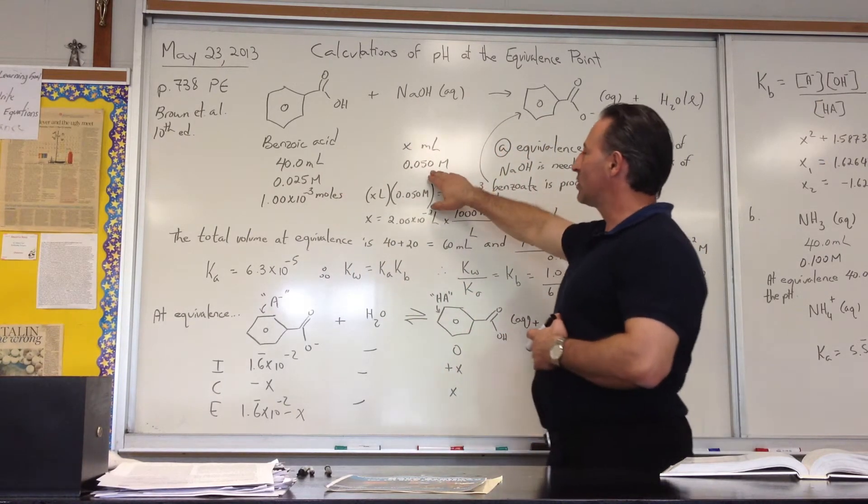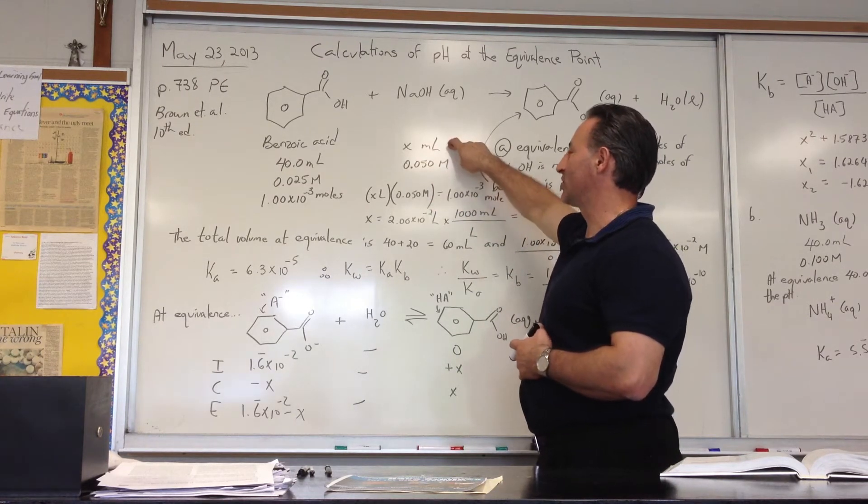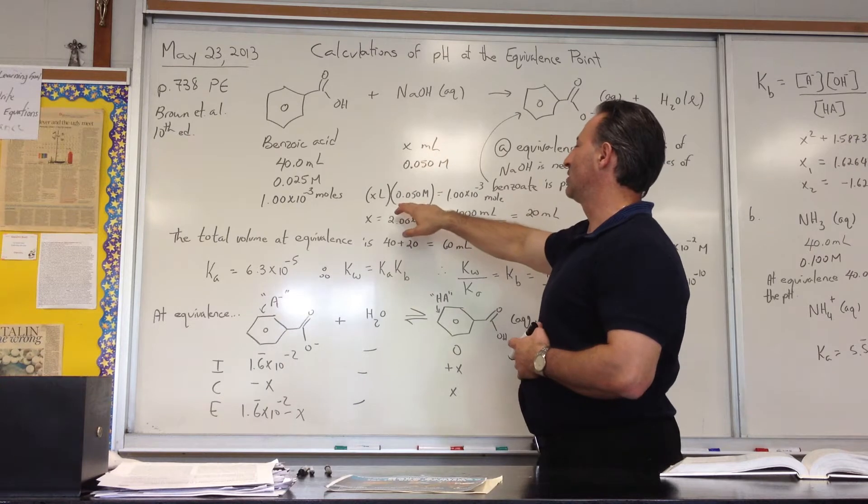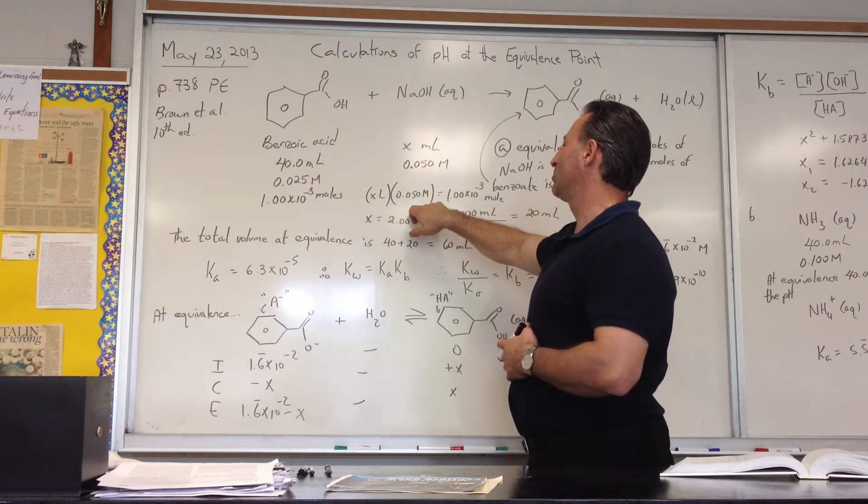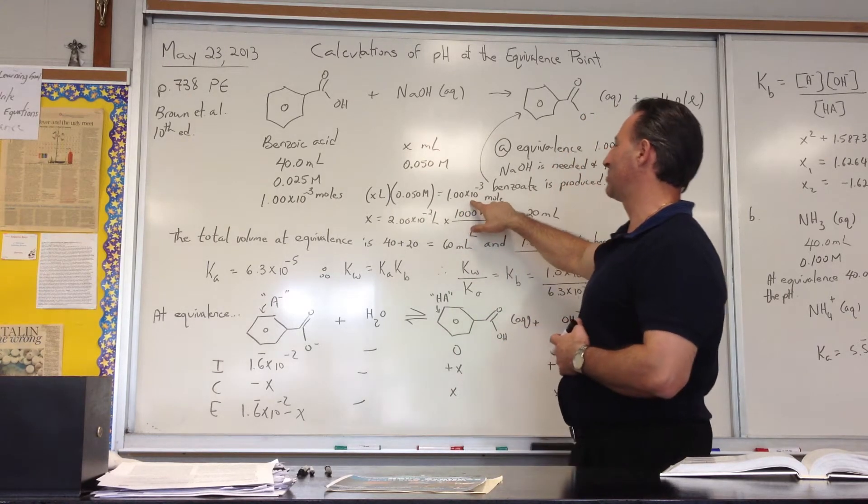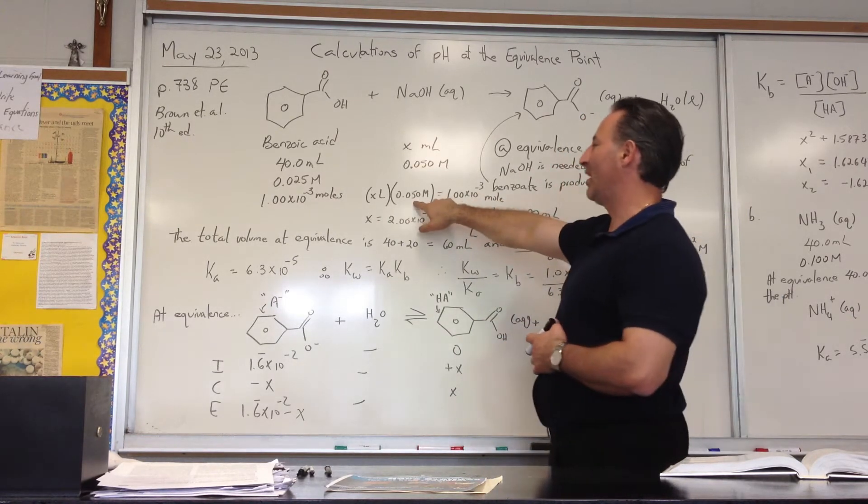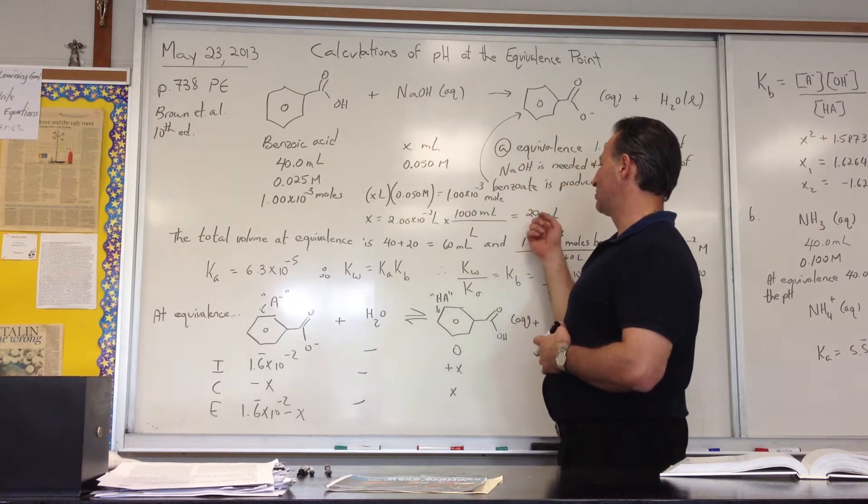We need 1.0 times 10 to the minus 3 moles of sodium hydroxide solution to titrate that amount of benzoic acid. We are only told that the concentration of the solution is 0.05 molar, so we don't know how many mL are going to be needed. So we did a calculation of the volume times the molarity to give you the number of moles. We know the number of moles has to be 1.0 times 10 to the minus 3. We know the molarity is 0.05, so X is the volume, and the volume turns out to be 20 mL.